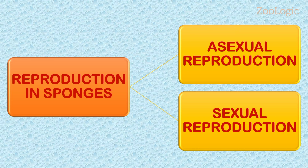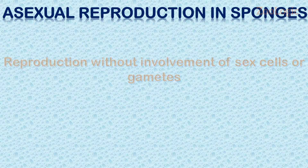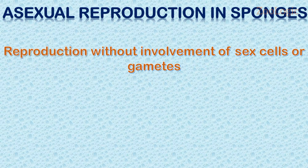Sponges are from kingdom Porifera, but reproduction occurs by both means — that is asexual reproduction and sexual reproduction. Reproduction without the involvement of sex cells or gametes is termed as asexual reproduction. During asexual reproduction, a single parent gives rise to two or more offspring. Since the process involves only the replication of cells by mitosis, the offspring have hereditary properties identical to those of the parents.